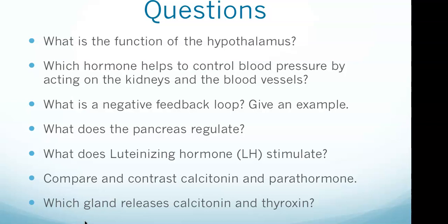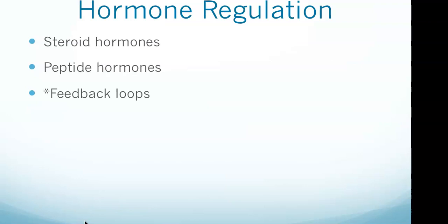Starting with hormone regulation: the endocrine system consists of multiple organs that secrete hormones directly into the bloodstream to control body processes and maintain homeostasis. Hormones travel through the bloodstream and bind to receptors, triggering a response by the target tissue. The two main classes of hormones are steroid and peptide hormones. Steroid hormones are water soluble and bind to receptors on the surface of target cells, inducing a signaling cascade that leads to a rapid response.